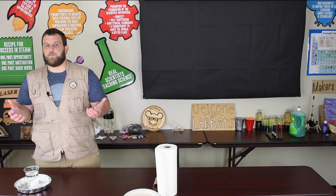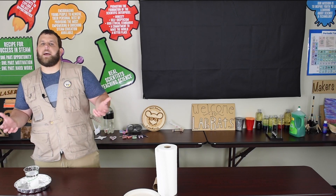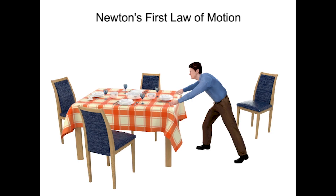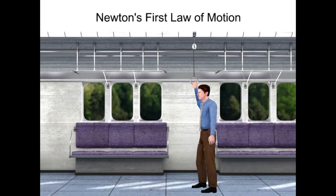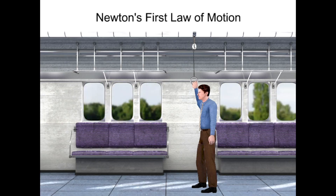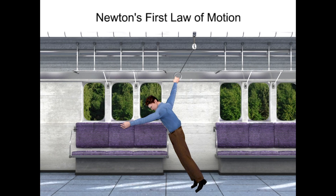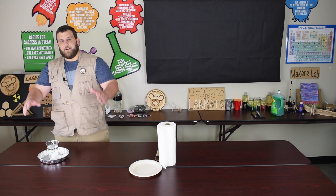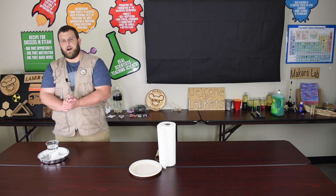Newton's first law states that an object at rest will stay at rest, or an object in motion will stay in motion in a straight line at a constant speed, unless acted upon by a force. This law can be observed when a tablecloth is whipped from underneath a dinner setting while the dishes remain in place. When a fast-moving subway car comes to a quick stop, passengers continue traveling at the previous speed and get thrown forward. This property of matter is known as inertia, and Newton's first law is often termed the law of inertia.